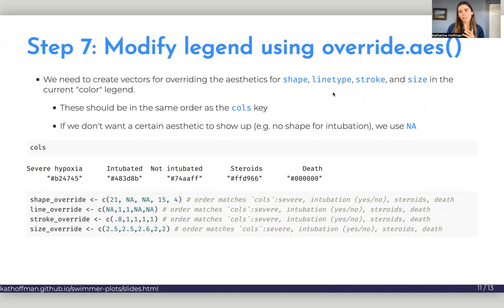But to do this, to use override aesthetic, we need to create vectors for overriding everything that we want to overwrite. So shape, line type, strokes, and size for this plot, because I changed all of those things in the geom_point layers. So these override vectors need to be in the same order as the color key that we made, the calls key.